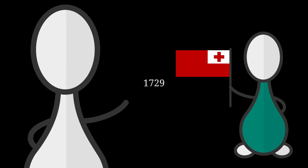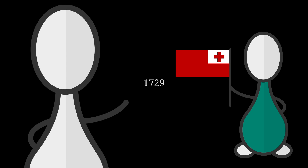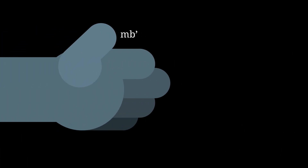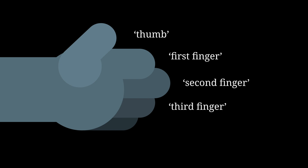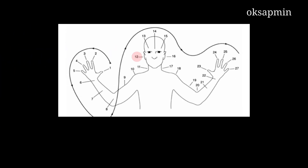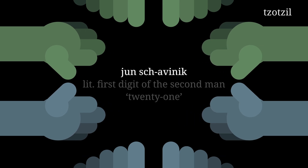And like we briefly touched on last time, number words needn't be numbers at all. They can be body parts — instead of saying 1, 2, 3, 4, 5, you could say thumb, first finger, second finger, third finger, pinky. Oksapmin, from Papua New Guinea, counts in base 27 using 27 body parts. So the number 12 is literally the word for ear, 'nata.' The number 16, 'tan nata,' is literally the ear on the other side. The Mayan language Tzotzil goes one step further — it counts in base 20 using the fingers and toes. When you run out of digits to count, you count the digits of the person next to you. First digit of the second man: 21.